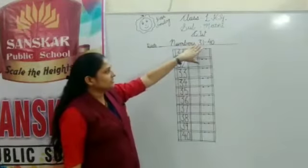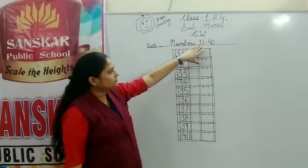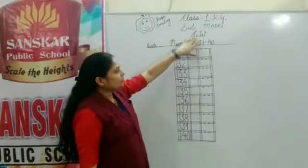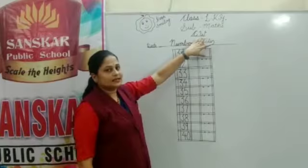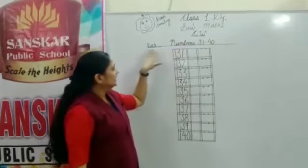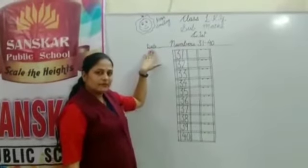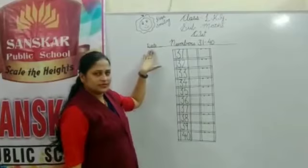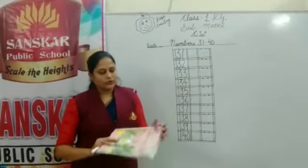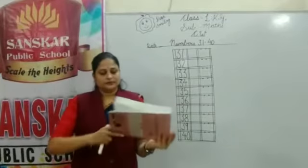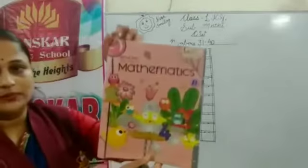So today I will start from 31. But first of all you have to mention CW — it means class work — then the date. Now look at here. This is your math book.